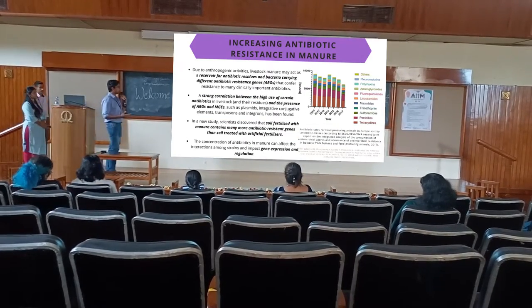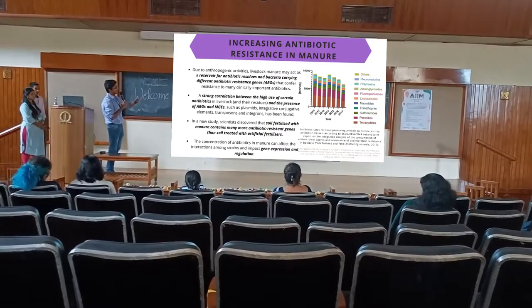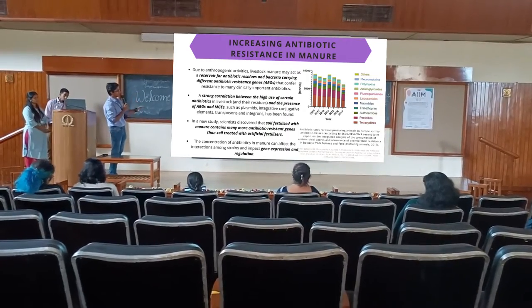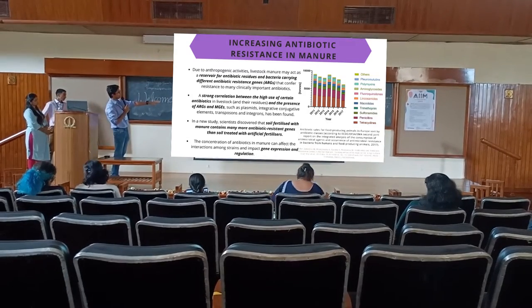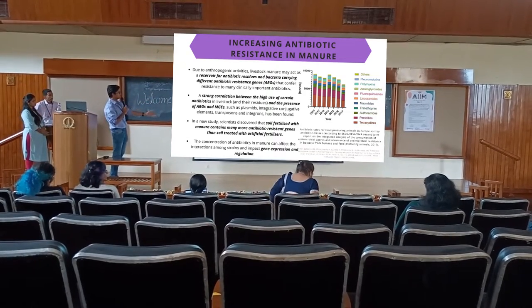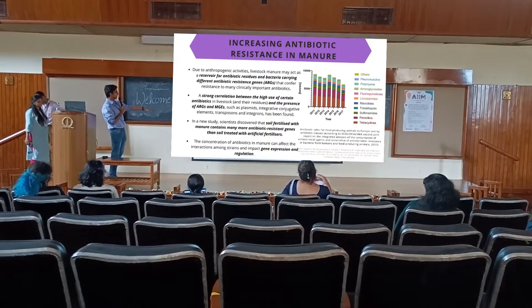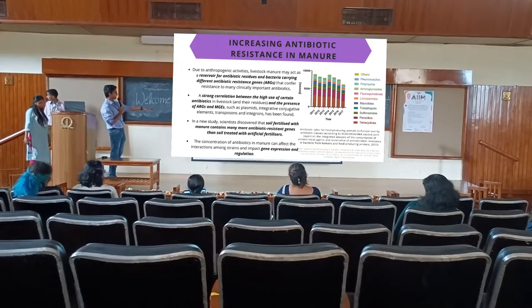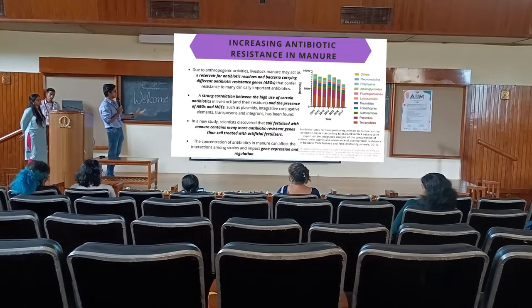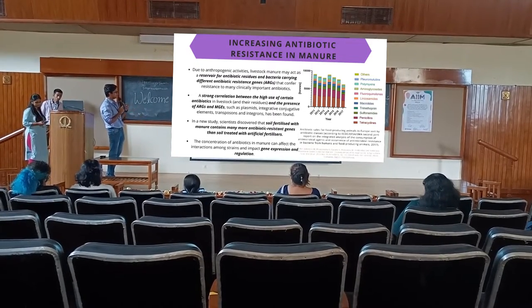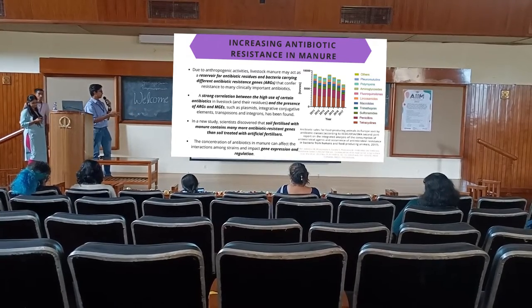To give you an idea of how significant the problem is: in the graph you can see the use of antibiotics increasing every year. Tetracycline is the most used antibiotic. As you can see, the area is affecting the antibiotic — soil fertilized with manure containing antibiotics has more resistant genes than soil with artificial fertilizers, and conservation of antibiotics in manure can affect interaction among strains.